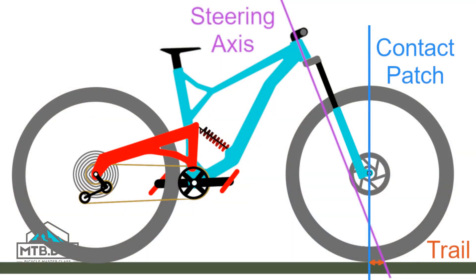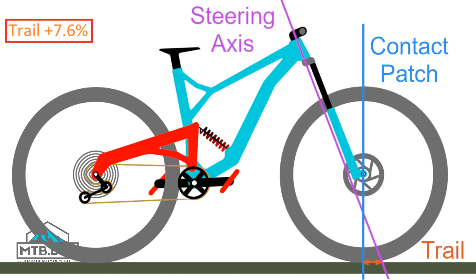We can use the calculator on MTB.dev to isolate the change in trail and articulate the percentage change difference. The bike shown has a 66.9 degree head tube angle and 29 by 2.5 inch tires. Comparing both 51 and 44 millimeter offset forks, changing from the 51 to the 44 millimeter offset increases trail by approximately 7.6%.